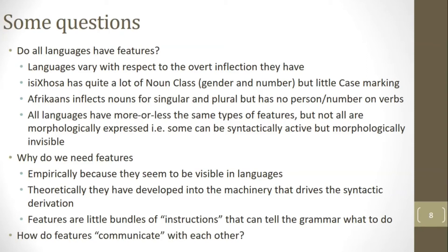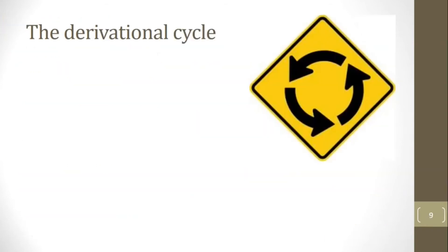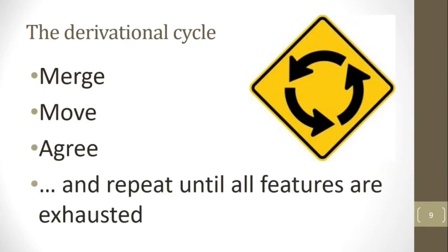If features tell the grammar what to do, the question is how do features communicate with each other? The answer lies in the derivational cycle of merge, move, and agree. Every tree structure is derived by first merging, then moving, then applying agree, and repeating that process until all features are exhausted. This should sound slightly familiar from Linguistics One — let's use the magic of video to recap.